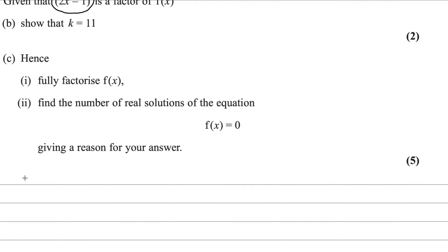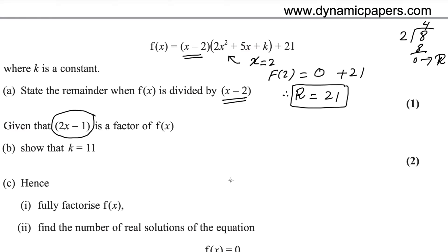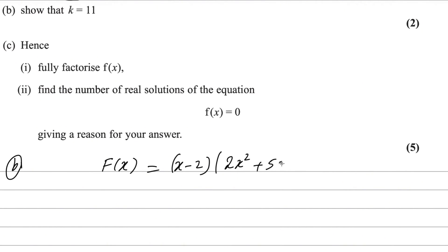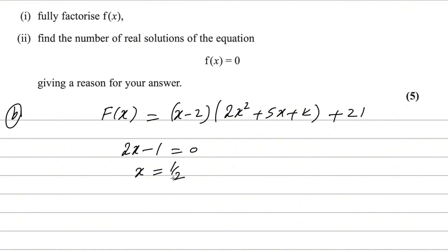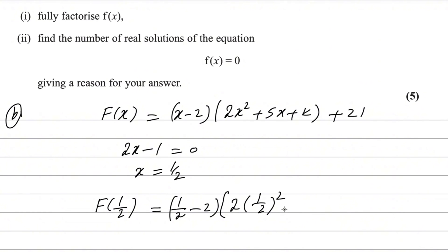Let us solve this in the given space for the second part. f(x) equals (x minus 2)(2x squared plus 5x plus k) plus 21. Since (2x minus 1) is a factor, set it equal to 0 to get x equals 1/2. Plug in: f(1/2) equals (1/2 minus 2) times (2 times (1/2) squared plus 5 times (1/2) plus k) plus 21.